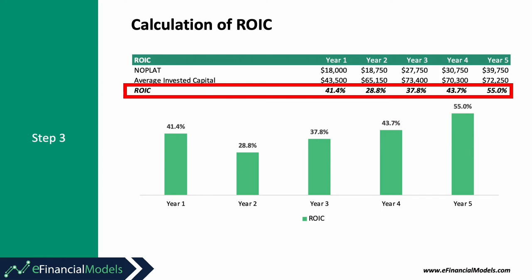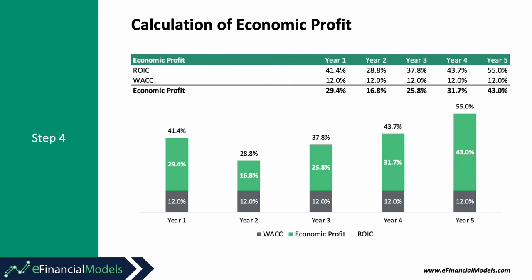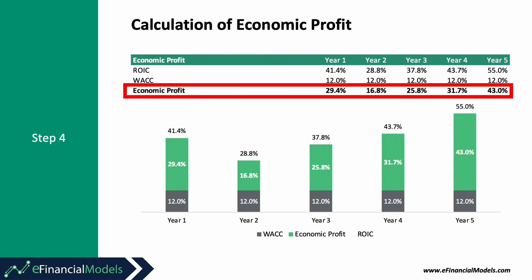As we can see, ROIC ranges between 29% and 55% during financial years 1 to 5. To know if this is a good return, we need to calculate the economic profit. First, we check a company's cost of capital — the weighted average cost of capital needs to be estimated for each company individually. Second, we compare ROIC to the cost of capital; the difference will be the economic profit. As shown in the chart, ROIC exceeds its cost of capital for all five years, therefore creating excess profits.